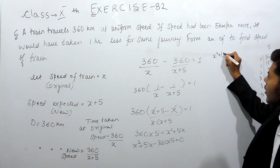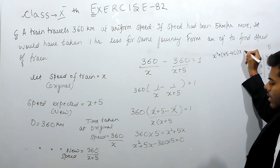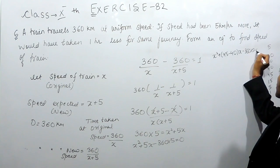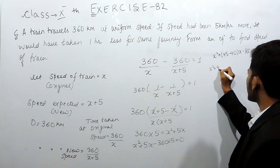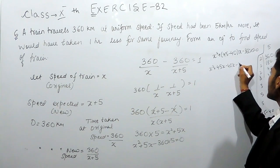So this is x square plus 45 minus 40x minus 360 into 5 equals to 0. X square plus 45x minus 40x minus 360 times 5.